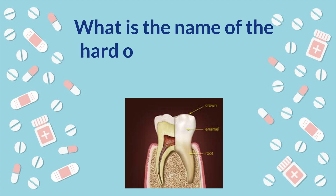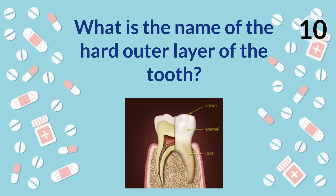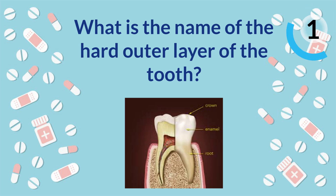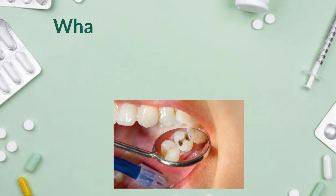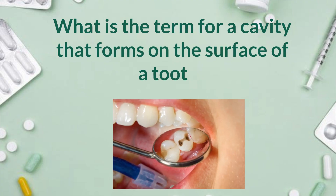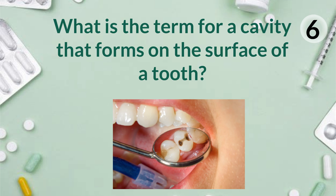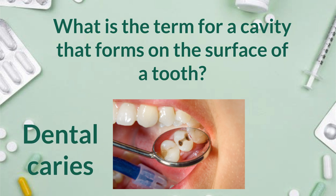What is the name of the hard outer layer of the tooth? Enamel. What is the term for a cavity that forms on the surface of a tooth? Dental caries.